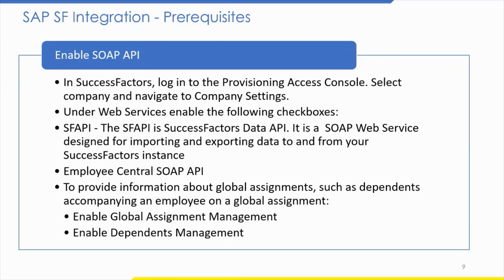For SAP SF integration prerequisites in SuccessFactors: log in to the Provisioning Access Console, select the company, and navigate to Company Settings. Under Web Services, enable the SF API — required for SAP SF API SuccessFactors Data API, which is a SOAP web service for importing and exporting data from a SuccessFactors instance. Also enable Employee Central SOAP API to provide information about Global Assignment such as Dependent Accompany and Employee on Global Assignment. Enable Global Assignment Management and Dependent Management.